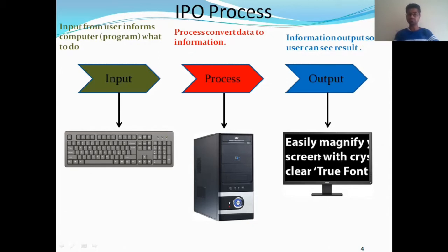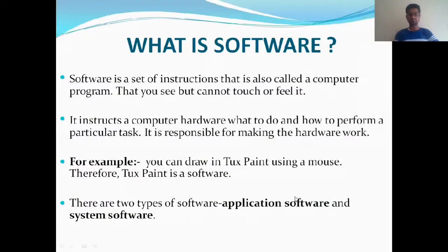Now, what is software? Software is a set of instructions, also called a computer program, that you can see but cannot touch or feel. It instructs the computer hardware what to do and how to perform a particular task. It is responsible for making the hardware work.